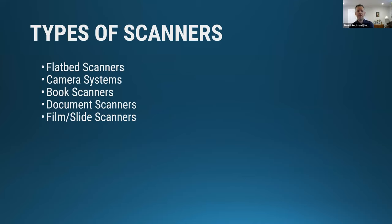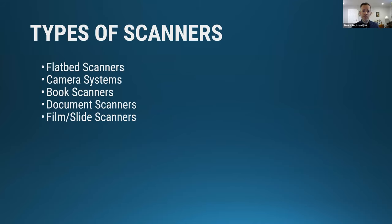Some basic types of scanners: there are many specialty scanners and camera systems, but we'll focus on a few. Flatbed scanners — most of you have probably seen these: you put the item down, close the lid, press a button, and you've got an image. Then there are camera systems, book scanners, document scanners, and dedicated film and slide scanners. Some of these can handle multiple types of material.